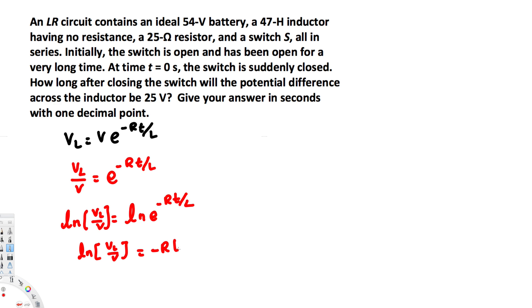Right, now we can go ahead and plug in the values. Ln of V_L is 25 over V, and this voltage is 54. And the resistance is 25 times t divided by L, and L is the inductance, that's going to be 47.